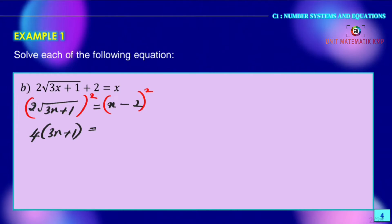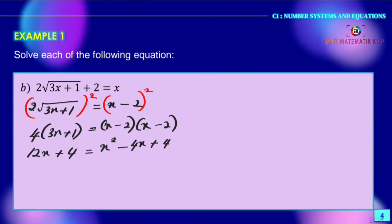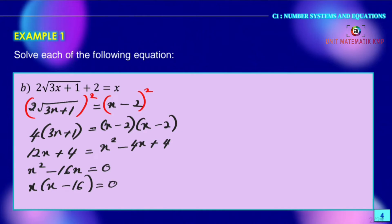We expand the right-hand side: (x − 2)(x − 2) = x² − 4x + 4. So 12x + 4 = x² − 4x + 4. Rearranging into standard quadratic form: x² − 16x = 0. Factorizing: x(x − 16) = 0. So we have x = 0 or x = 16.